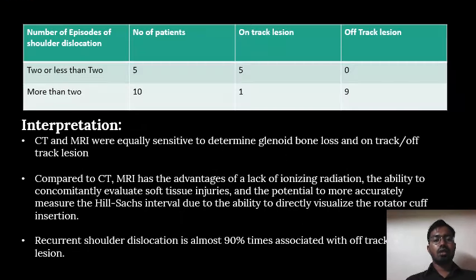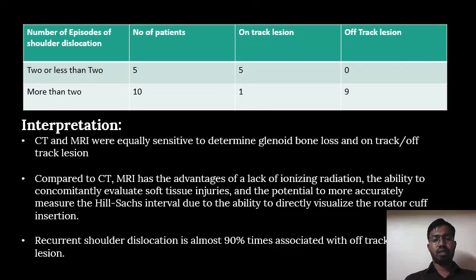Out of the 15 patients, 10 patients had more than 2 episodes of shoulder dislocation. Among these 10 patients, almost 90% had an off-track or engaging Hill-Sachs lesion, whereas patients with fewer than 2 dislocations had no off-track lesions. This indicates that in patients with recurrent shoulder dislocation, off-track lesion is more prevalent.